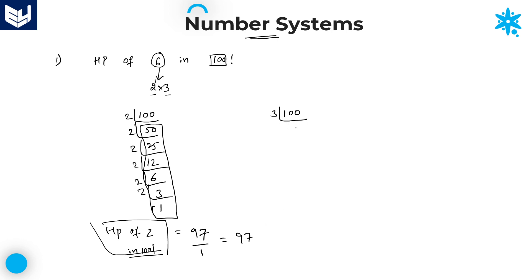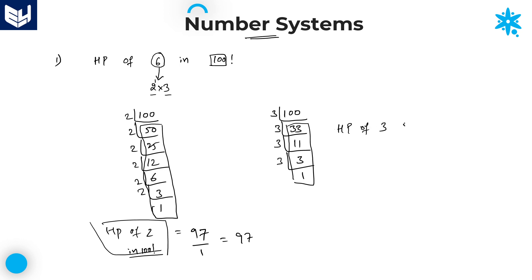Now divide with 3 also. 100 divided by 3 is 33, then 11, then 3, then 1. Add all the quotients: 33 plus 11 is 44, plus 4 is 48. Divided by the power of 3, which is 1. So the highest power of 3 in 100 factorial is 48.